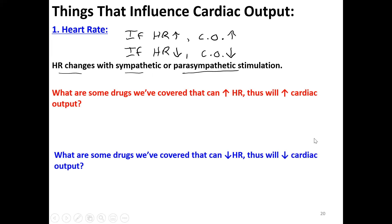Things that can decrease heart rate include drugs that block receptors. Atenolol blocks just the beta-1 receptor, and propranolol blocks both beta-1 and beta-2. You can also block the ion channels — sodium and calcium channel blockers will decrease heart rate.